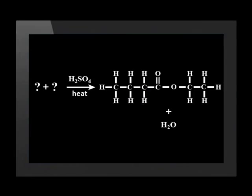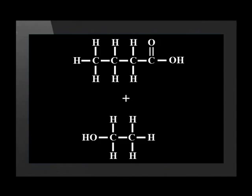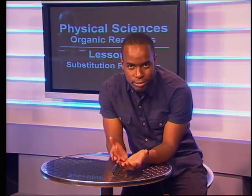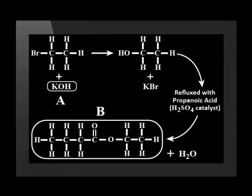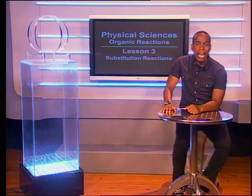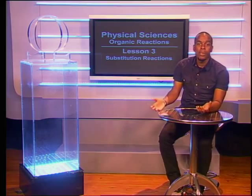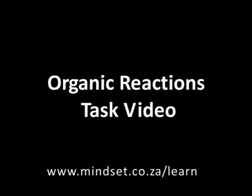Try this question: which acid and alcohol form propyl pentanoate and a water molecule? We can work out that the original molecules were propanol and pentanoic acid. Here's one more question on substitution: identify the substances shown by the letters A and B in the diagram. Both of these reactions were substitution. Molecule A is potassium hydroxide and molecule B is ethyl propanoate. Check out the other videos as well as the Mindset website at www.mindset.co.za/learn. Goodbye.